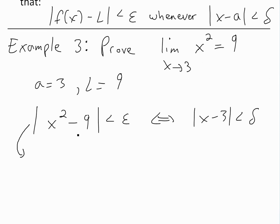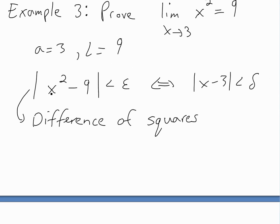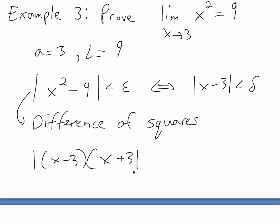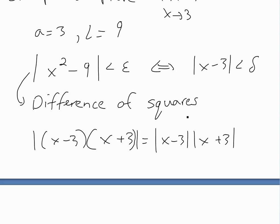This is a difference of squares — see the video link below for more on this. We can write |x² - 9| as |x - 3| times |x + 3|, because when you expand those factors you get x² - 9. When multiplying two numbers the absolute values can be separated, so we have |x - 3| · |x + 3| less than epsilon. Remember, I want to isolate |x - 3| by itself.